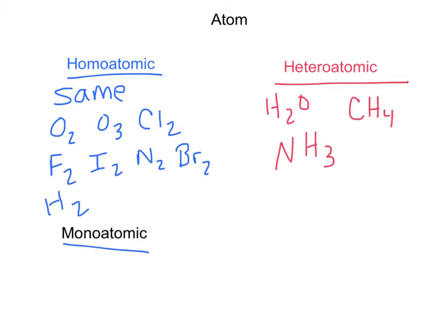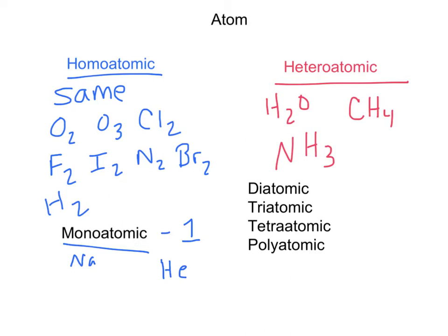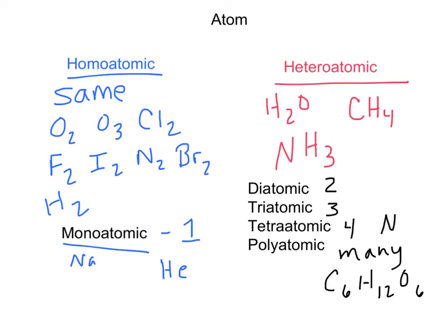Monoatomic means one atom — like Na or helium, just one element. We can also classify things as diatomic (two atoms), triatomic (three), tetraatomic (four atoms or elements together), and polyatomic, meaning many elements together. For example, C₆H₁₂O₆ would be polyatomic; NH₃ is tetraatomic; H₂O is triatomic; O₂ is diatomic.